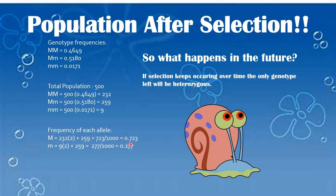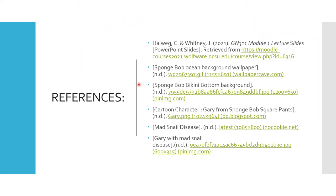The frequency of the big M allele also went up. In the future, it will probably occur that at one point all of the snails will be heterozygous, because that is the dominating genotype. References. Thank you for watching — hope that helped.